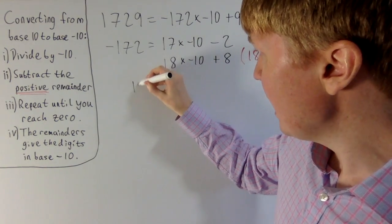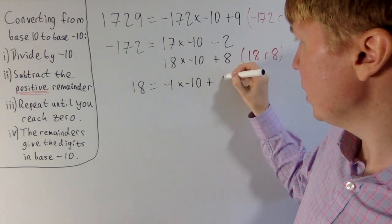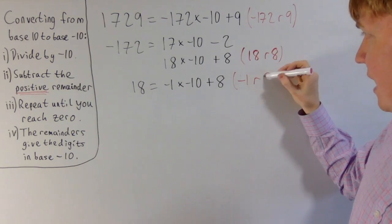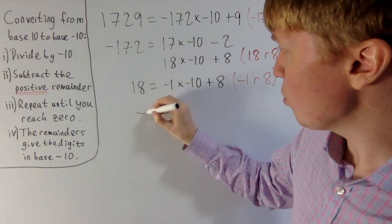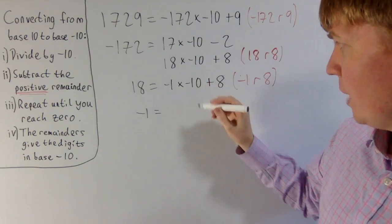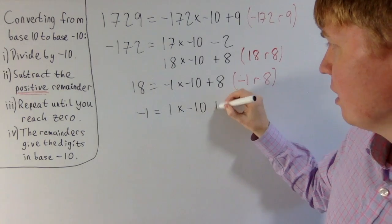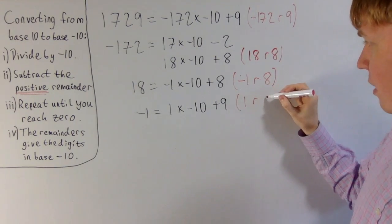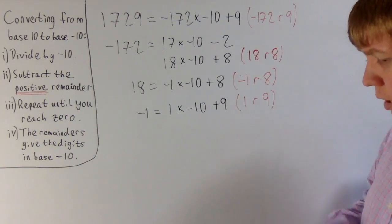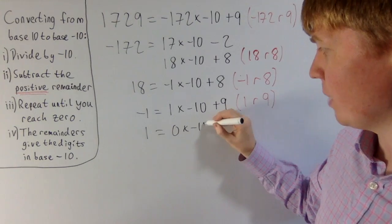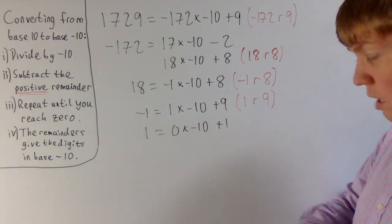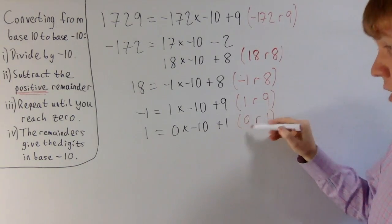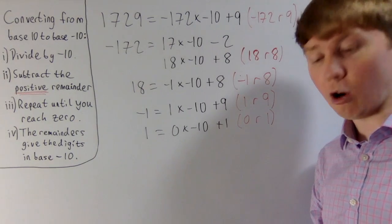Now do the same with 18: we can write this as minus 1 times minus 10 plus 8, so 18 divided by minus 10 gives minus 1 remainder 8. Then for minus 1: we can write this as 1 times minus 10 plus 9, so minus 1 divided by minus 10 is 1 remainder 9. And finally, 1 is 0 times minus 10 plus 1, so 1 divided by minus 10 is 0 remainder 1. At this point you'd divide 0 by minus 10, giving 0 remainder 0, and our algorithm has terminated.